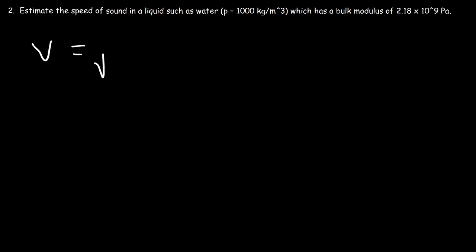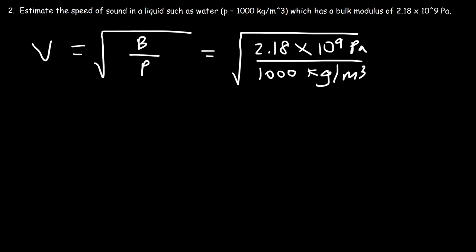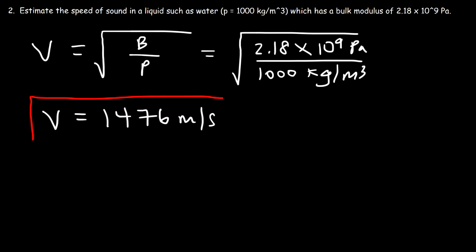Number two: estimate the speed of sound in a liquid such as water, which has a bulk modulus of 2.18 times 10 to the 9 pascals, or 2.18 gigapascals. The speed of sound in a liquid is the square root of the bulk modulus divided by the density. The density of water is 1,000 kilograms per cubic meter, and this works out to be about 1,476 meters per second — that's the speed of sound in water.